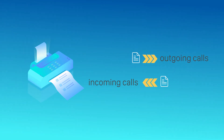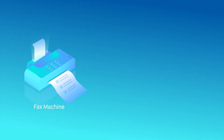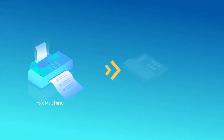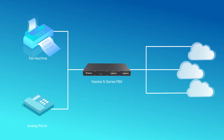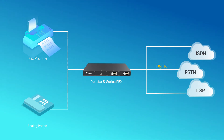Sending and receiving a fax is dealing with outgoing and incoming calls. The fax machine can be regarded as an analog phone. We can connect the fax machine to the FXS port of the PBX and then send and receive fax through physical trunks like PSTN and analog line, E1 line, BRI trunk connected to the PBX, as well as the SIP trunk of the PBX.